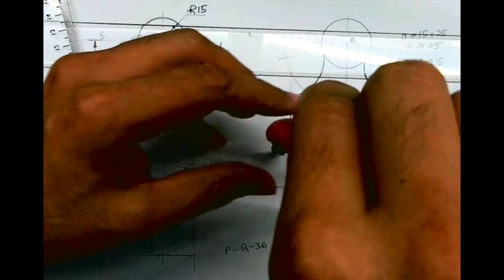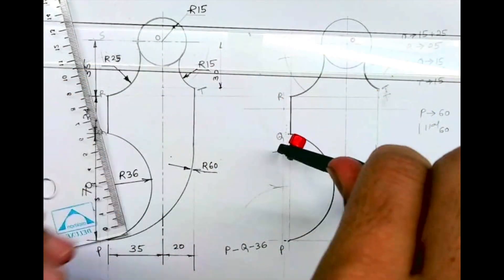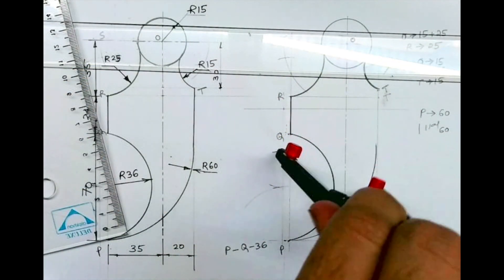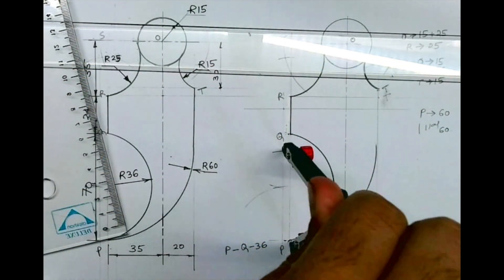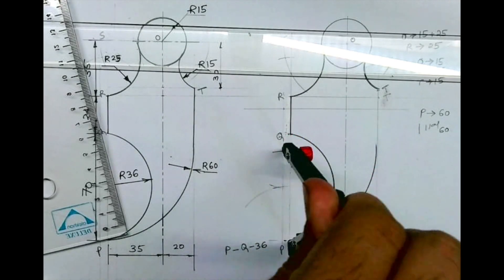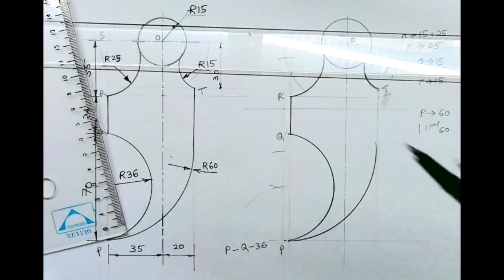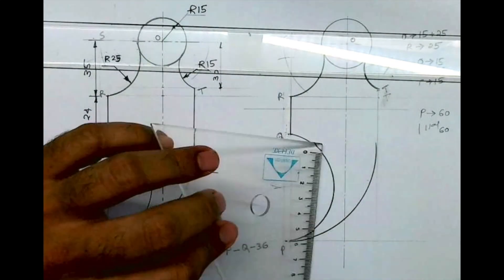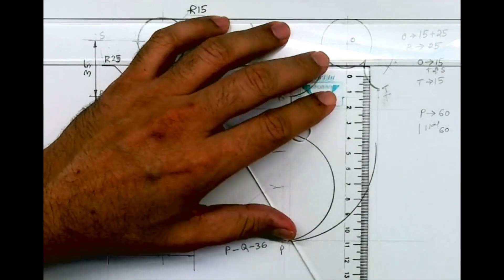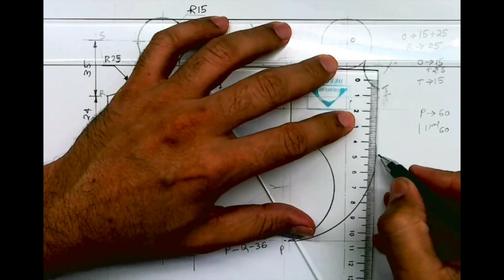By this way we have completed the sum, and then we can do dimensioning. I hope you all have understood this sum. This is from the ICSE 2023 board paper. Thank you.